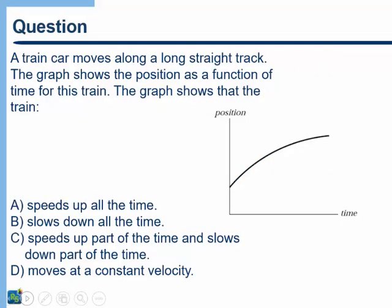Let's try this question. A train car moves along a long straight track. The graph shows the position as a function of time for this train. The graph shows that the train is doing what? This is a tricky one, often for students when you're first learning this material. One of the things that you'll notice is you should always draw graphs — graphs will help you to understand this. Notice we've got a graph of position versus time, and our question is asking about velocity.